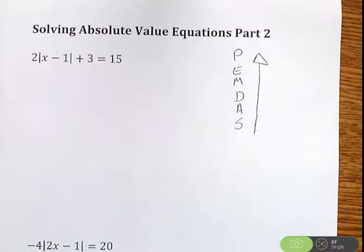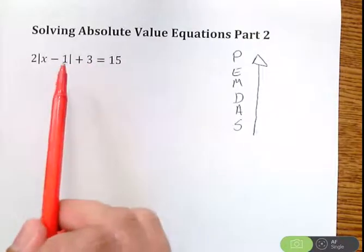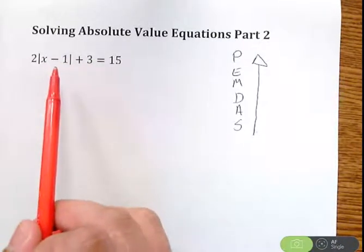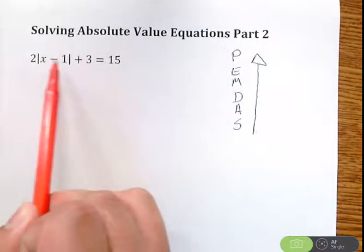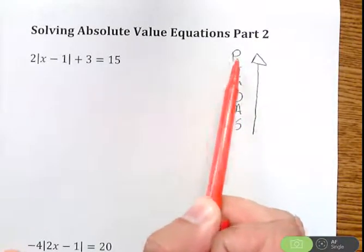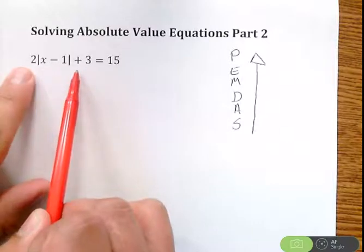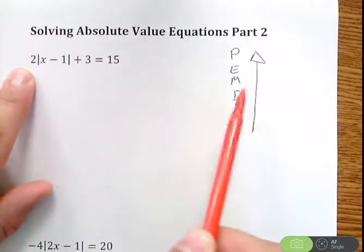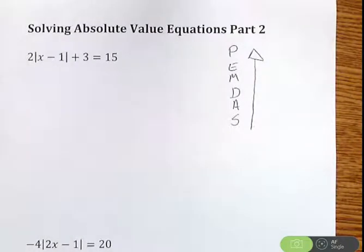So if we look at this first problem where we have 2 absolute value of x minus 1 plus 3 equals 15, remember absolute values are like parentheses. So I cannot touch what's inside this absolute value until the very end. So I got to get rid of the addition subtraction multiplication division first on the side with x, then I can work on the inside.